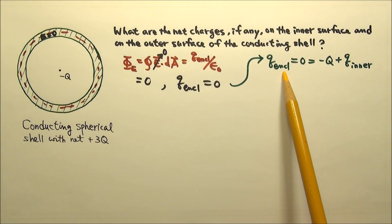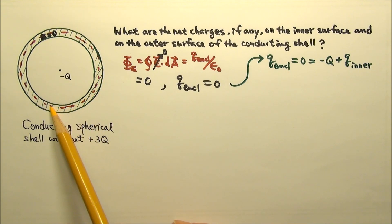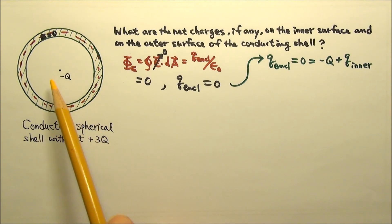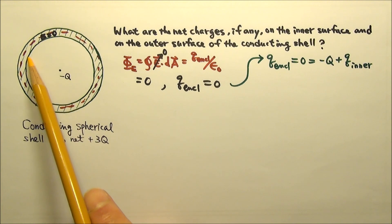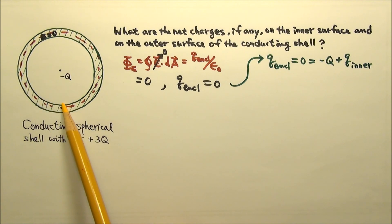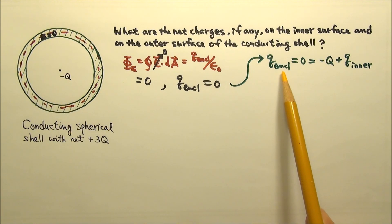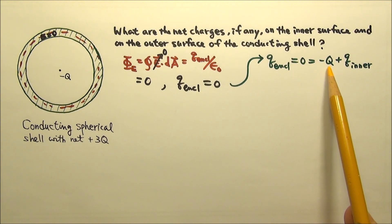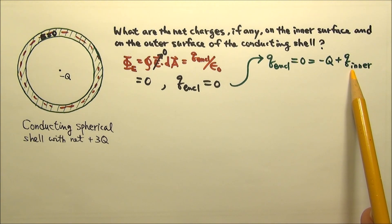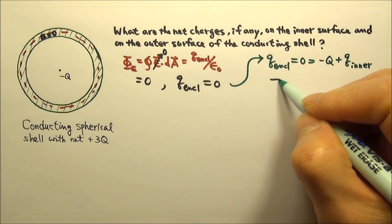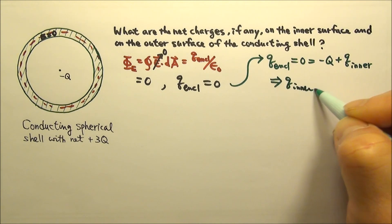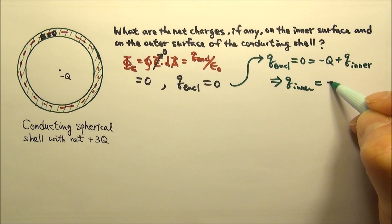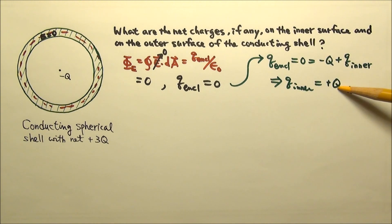The net charge enclosed by the Gaussian surface includes the point charge at the center, negative q, and the charges on the inner surface. So the charge on the inner surface must equal positive q, so these two can add up to be zero.